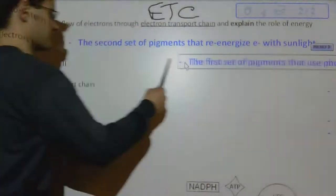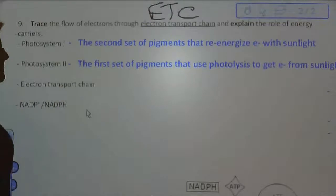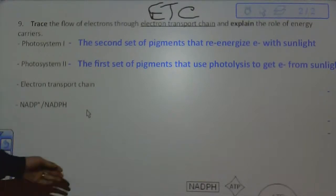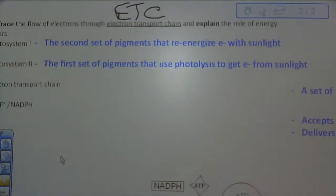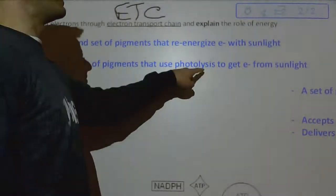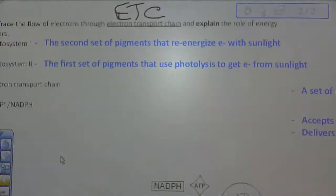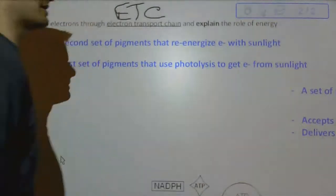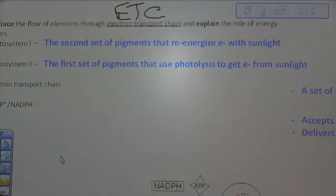Photosystem two, discovered second, but it is the first set of pigments that uses photolysis, the process I just described, to get electrons from splitting water using sunlight. Again, recall what photolysis means, using light to break water into oxygen gas. When we break the water, that's where the electrons come from. There's actually two electrons that we're going to talk about.